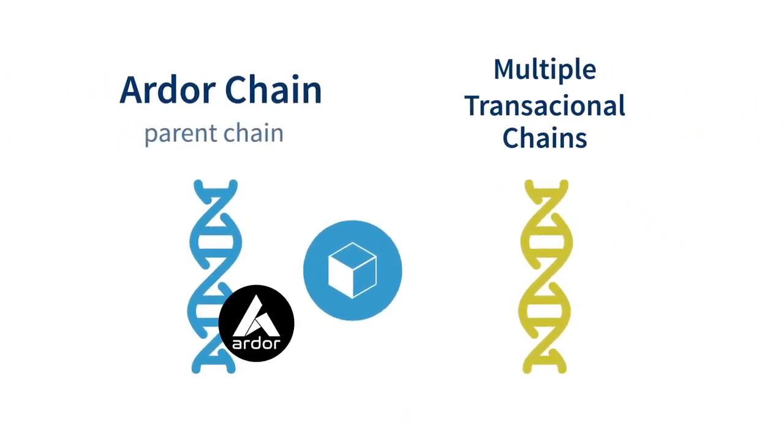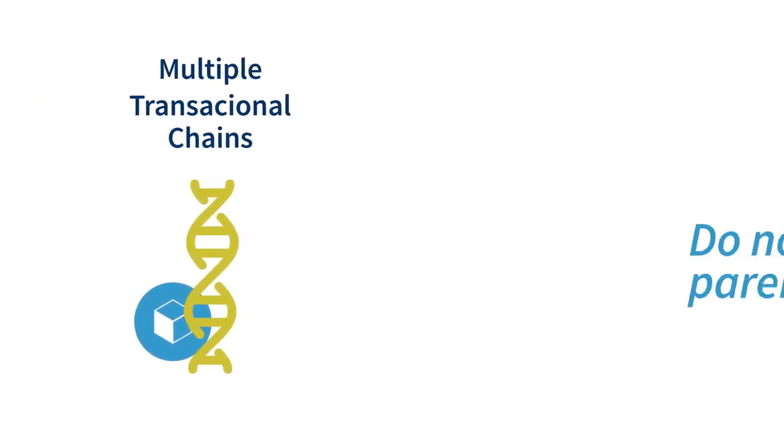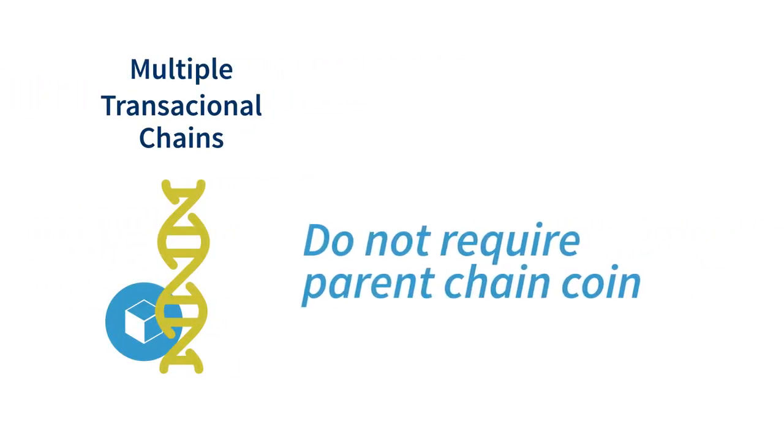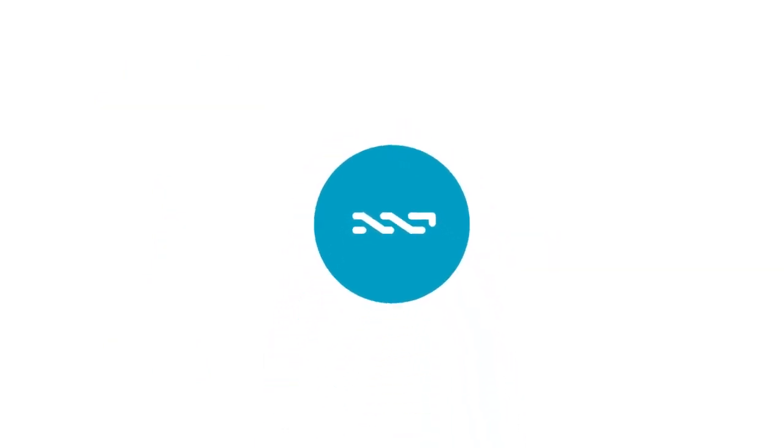These transactional chains, known as child chains, have their own native coin for all transactions and thus don't require their users to have parent chain coins. Being built on NXT technology,